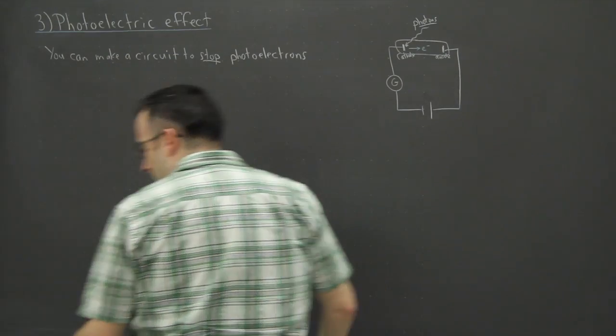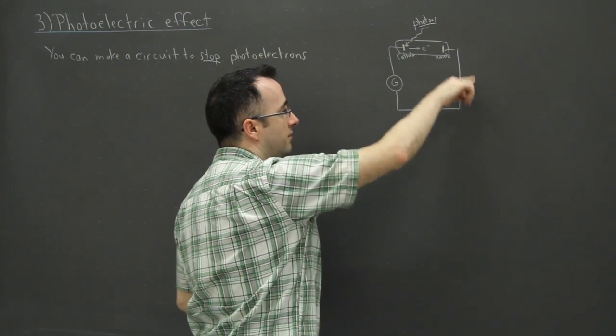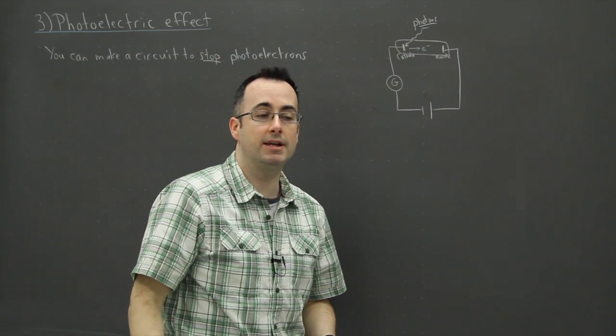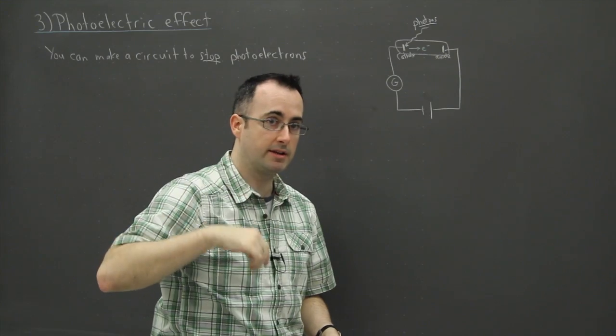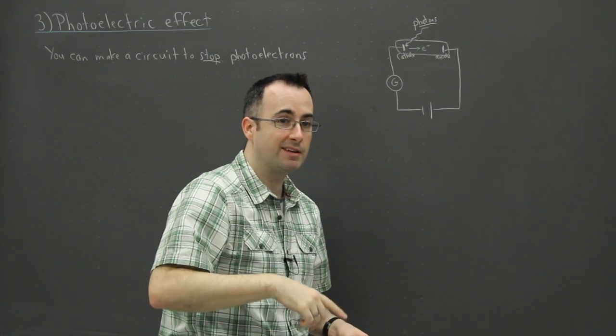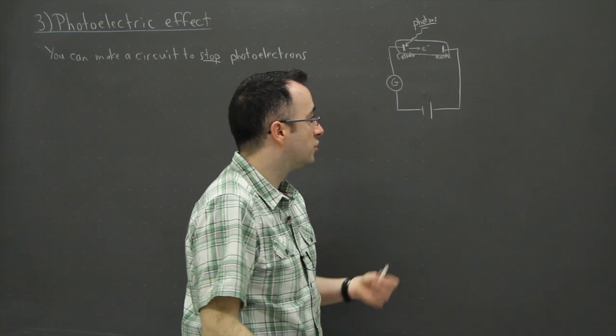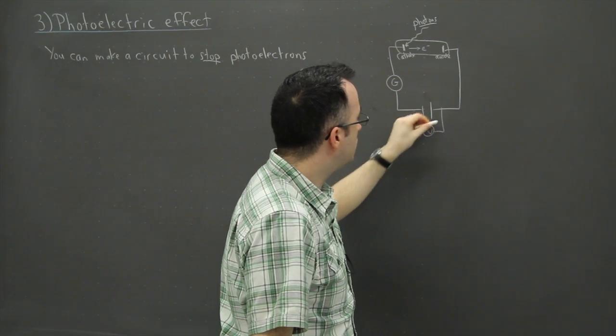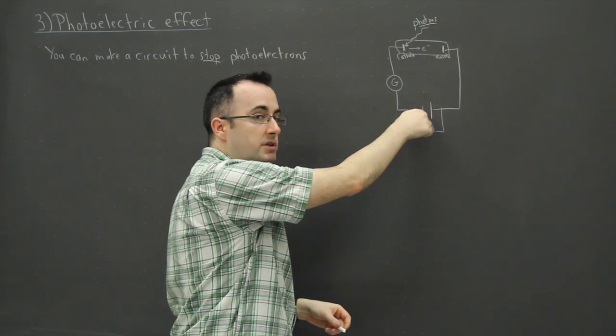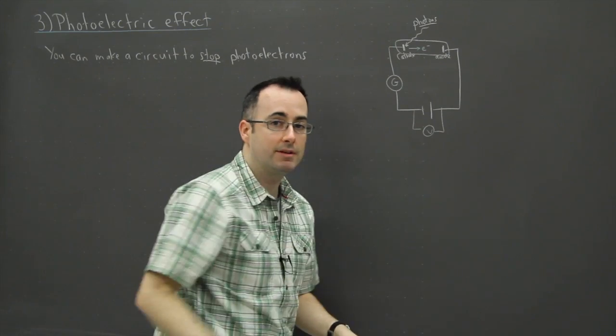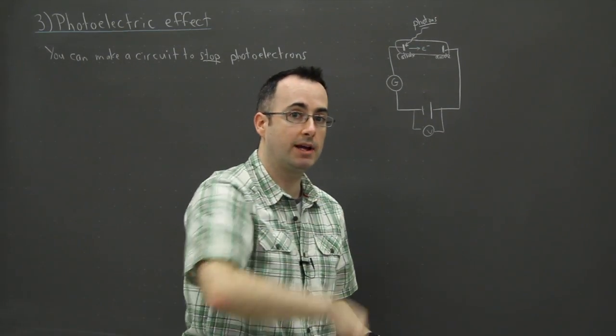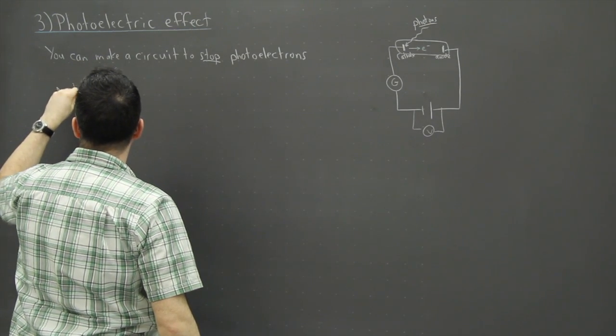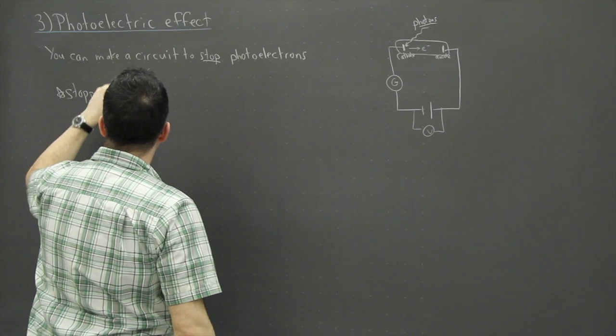But what I can do is I can connect a battery in order to oppose this. In other words, this flow of electrons - remember by definition that is what a current is. Current is number of coulombs per second, in other words it's the number of charges going by per second. So if the charges aren't moving there's no current, there's no electricity. So what we do is we set up a battery or some sort of terminal voltage in order to stop it. In other words, we play around with the voltage here until we get nothing coming out. We've actually stopped these photoelectrons.